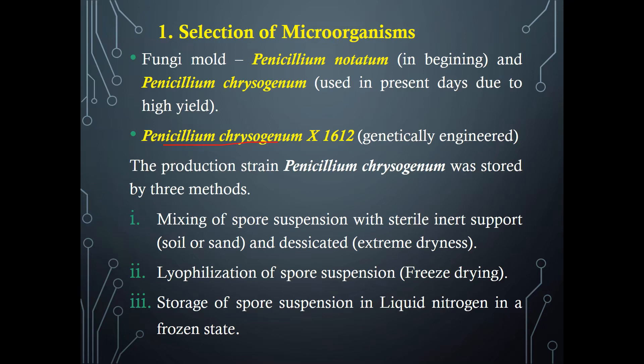The production strain Penicillium chrysogenum is stored by three methods. First, by mixing a spore suspension with a sterile inert support such as soil or sand, and then desiccating it. In the lyophilization method, the spore suspension undergoes freeze drying and can be stored for several years without losing viability. In the third method, the spore suspension is stored in liquid nitrogen in a frozen state.